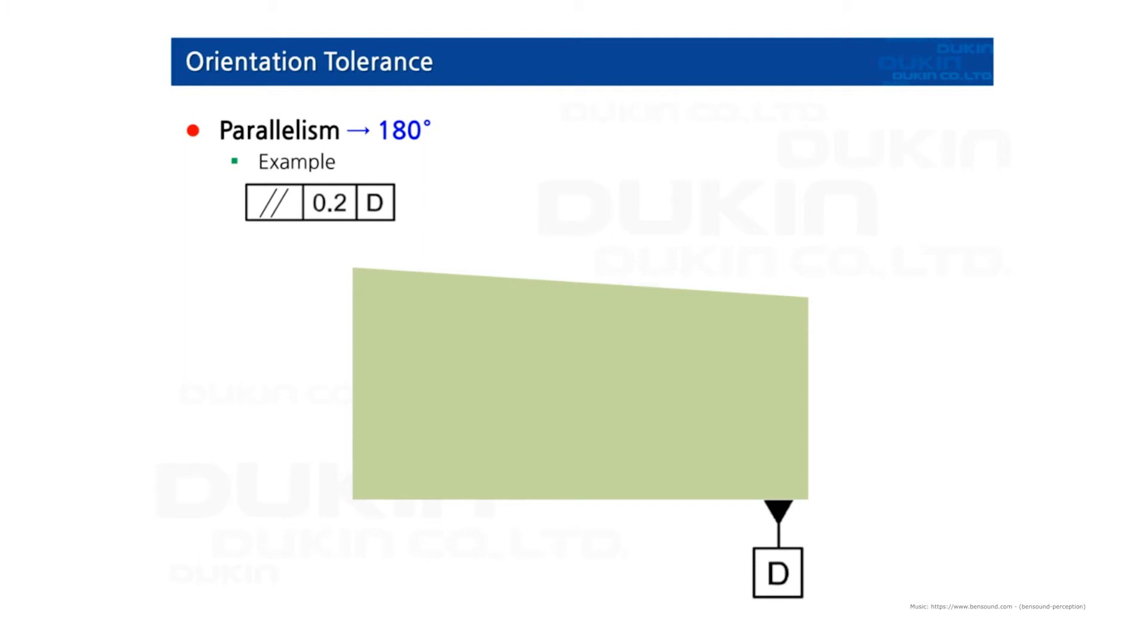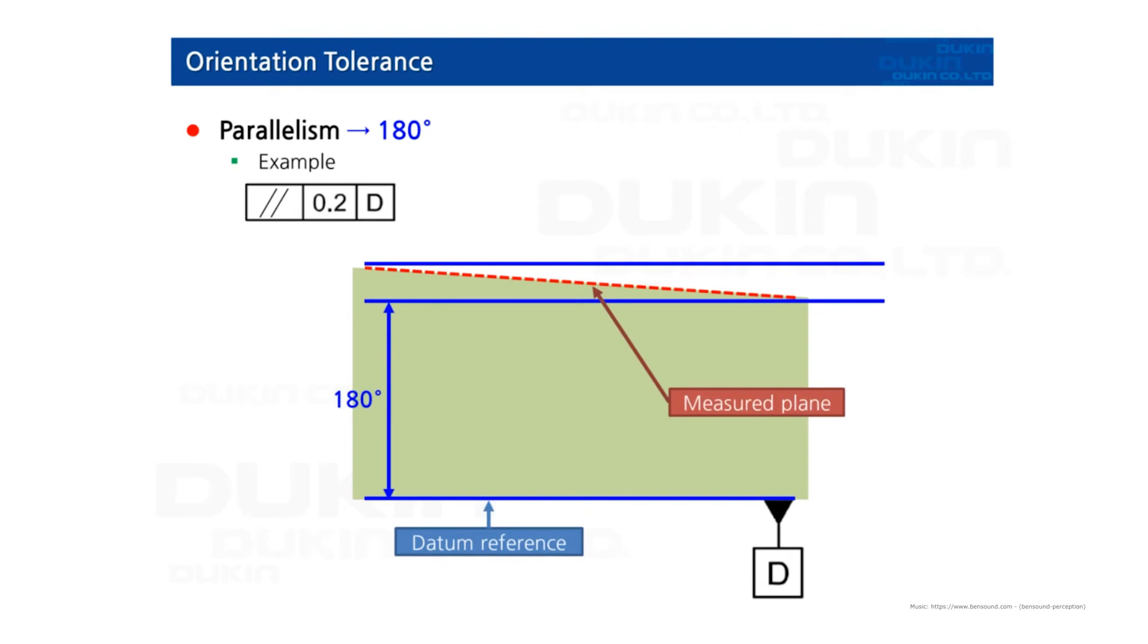Second, parallelism: datum D plane is here and we measure a plane. You can see the tolerance zone. The surface shall be within two parallel planes 0.2 apart that are parallel to datum plane D.